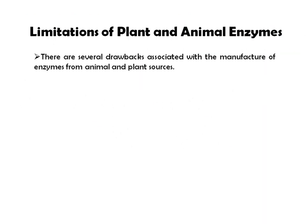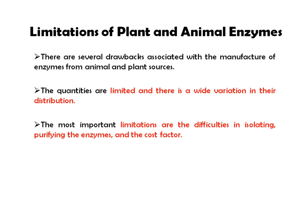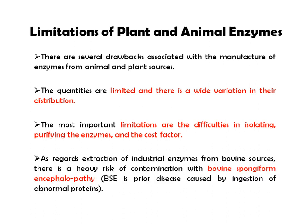Microorganisms are used more than 80% compared to plants and animals. There are several drawbacks associated with manufacturing enzymes from animal and plant sources: quantities are limited, there is wide variation in their distribution, and difficulty in isolating and purifying the enzyme is a major limitation along with cost. Additionally, extraction of industrial enzymes from bovine sources carries a heavy risk of contamination with bovine spongiform encephalopathy, a neurological disorder in cattle.